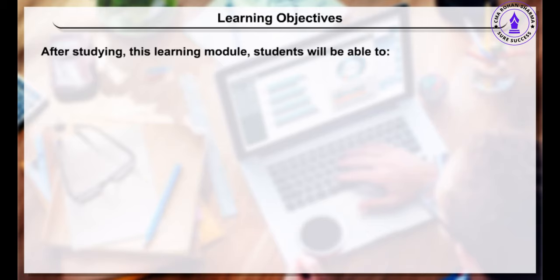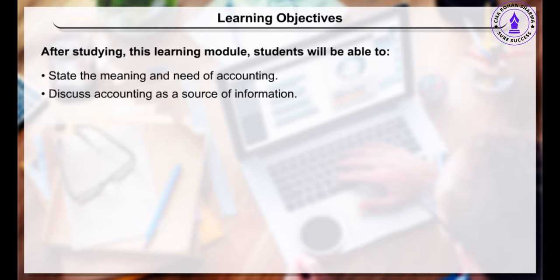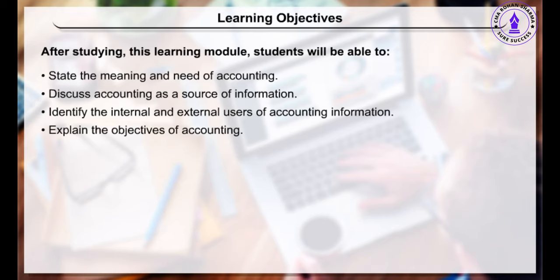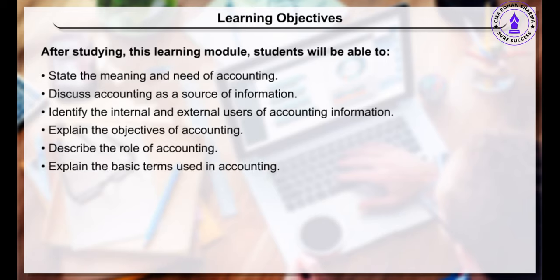Learning Objectives. After studying this learning module, students will be able to: state the meaning and need of accounting, discuss accounting as a source of information, identify the internal and external users of accounting information, explain the objectives of accounting, describe the role of accounting, and explain the basic terms used in accounting.